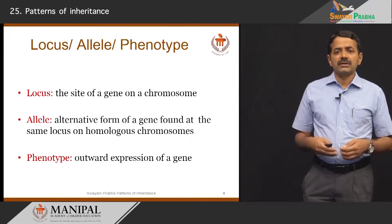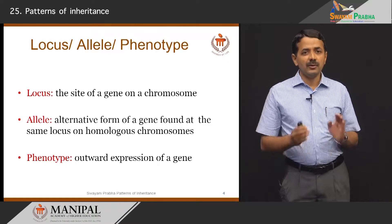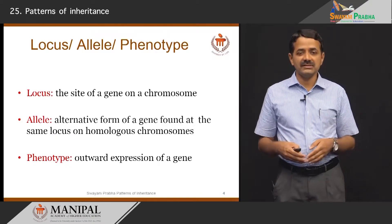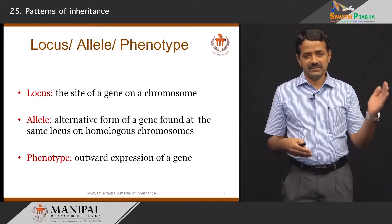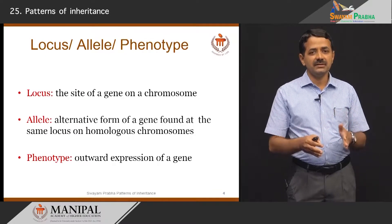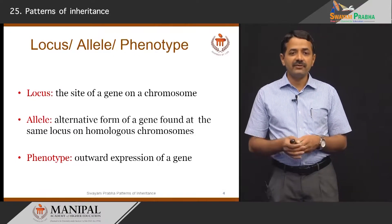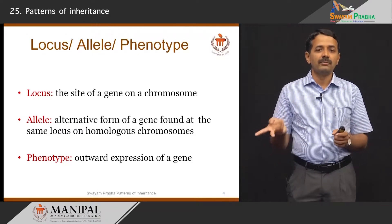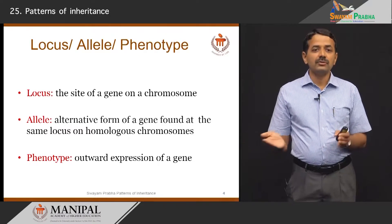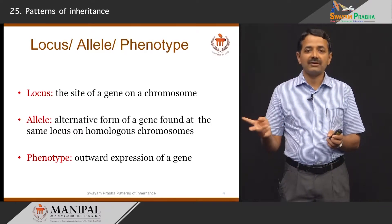Before I talk about autosomal or X-linked inheritance, I would like to describe a few terms. Locus means the site of a gene on a chromosome. We have nearly 18,000 to 19,000 genes, all located and arranged systematically from chromosome 1 to 22 and then X and Y. The site of a gene on a chromosome is called locus, and the alternative form of a gene found at the same locus on a homologous chromosome — we have a pair of chromosomes for every chromosome like chromosome 1, 2, 3 and so on.